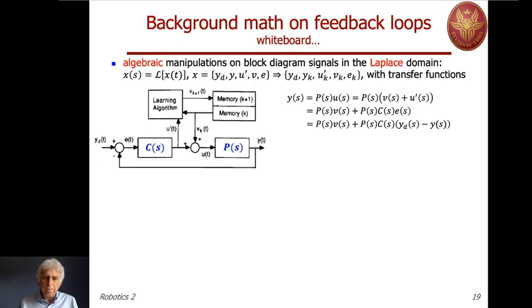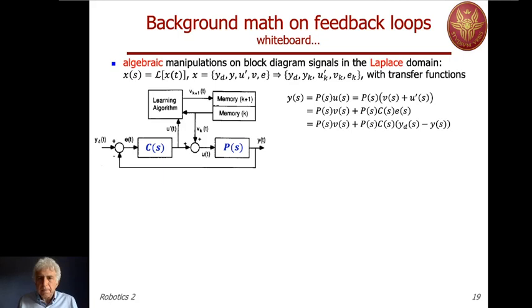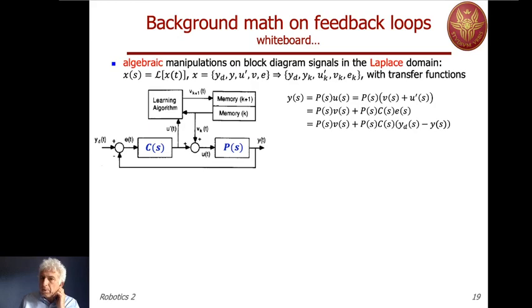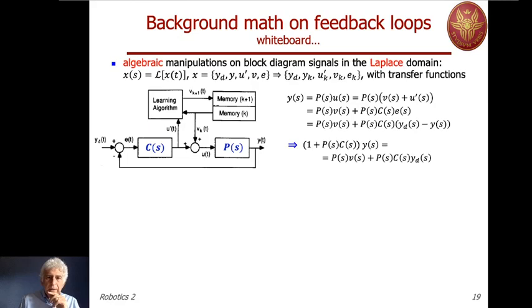Similarly, the error has a recursive expression: E_{k+1} = [(1-beta)/(1+PC)]*Y_d + [beta - alpha*W(s)]*E_k. The common factor [beta(s) - alpha(s)*W(s)] appears in both recursions. If the desired trajectory is repeated from trial to trial, the constant term depending on y_d remains the same, and when we look at the variation between iterations, that term vanishes. So the convergence of V_k and E_k depends only on whether the modulus of [beta(s) - alpha(s)*W(s)] is strictly less than 1.